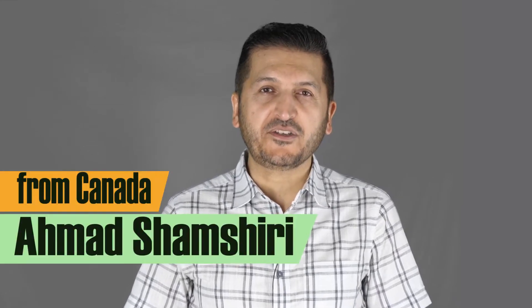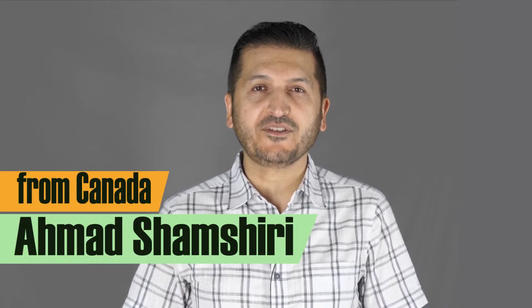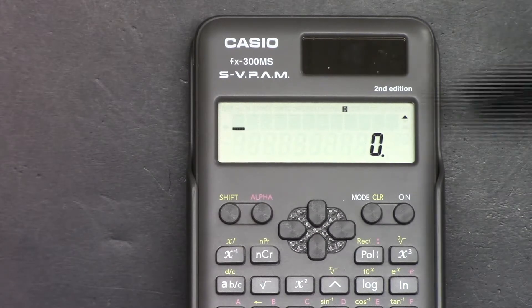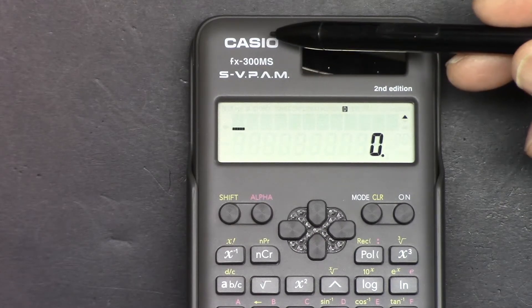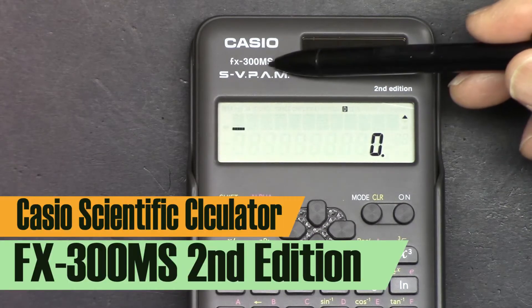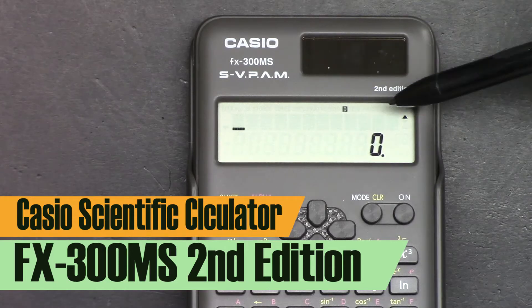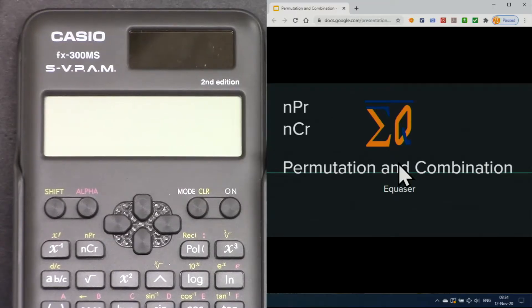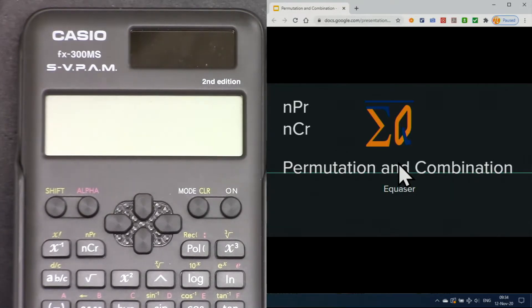Hi, welcome to a video tutorial from Equasor. My name is Ahmad Shamshiri. In this video we are going to learn how to use this Casio FX300MS second edition scientific calculator to do permutation and combination using this calculator.